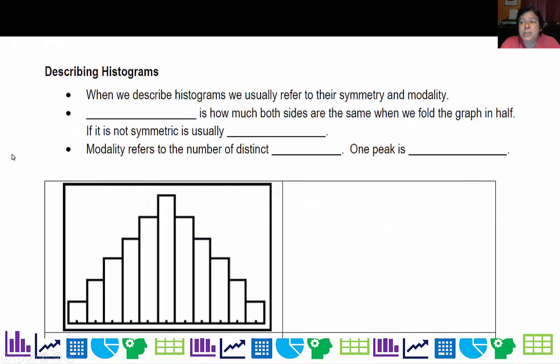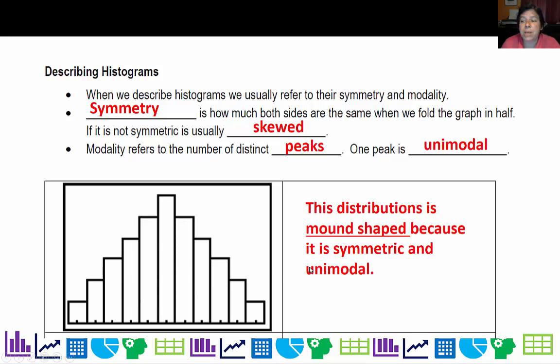Now you're also expected to describe histograms, and we usually refer to their symmetry or the modality. Symmetry is how much both sides are the same when we fold the graph in half. If it is not symmetric, it is usually skewed. Modality refers to the number of distinct peaks. If it has one peak, it's called unimodal. This is a very popular distribution shape right here. If you look at the symmetry, it definitely looks the same if I fold it in half, and there's only one peak. So this distribution is mound shape because it is symmetric and unimodal.